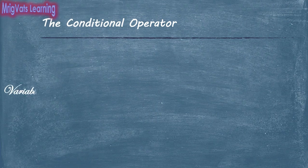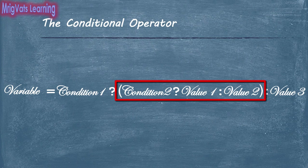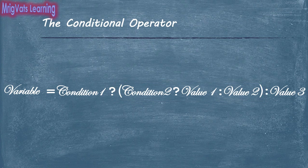After checking a condition, if you need to further check another condition, you can use another conditional operator on either side of the colon symbol. As a result, after the first condition is evaluated, the condition in the next operator is evaluated based on the result of the first condition.